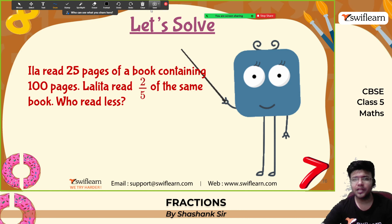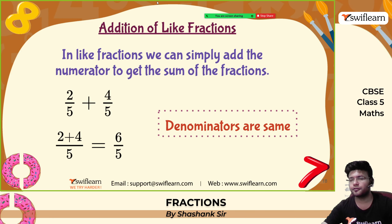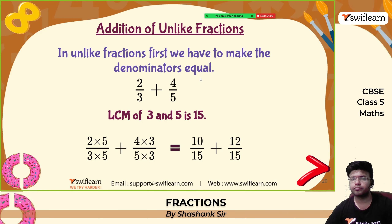Let's move on to the new topic: addition of fractions. The first is addition of like fractions. In like fractions, we can simply add the numerators to get the sum. For example: 2 by 5 plus 4 by 5 — denominators are the same, so write the denominator 5 and add the numerators: 4 plus 2 is 6. The answer is 6 by 5. For 5 by 9 plus 7 by 9: denominators are the same (9), add numerators — 7 plus 5 is 12 by 9, which simplifies to 4 by 3.